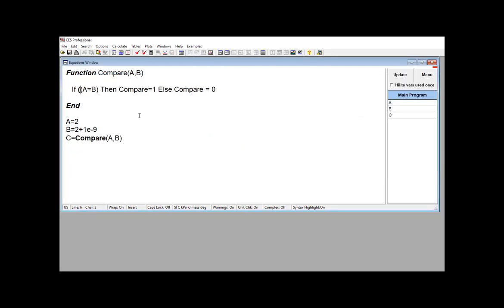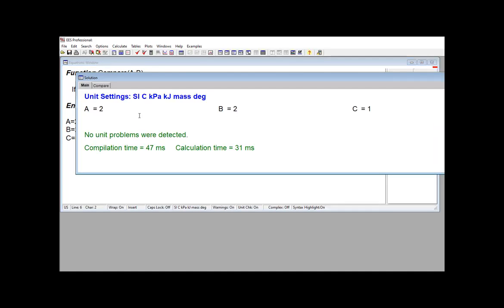So in order to combat this problem, it's a better approach to use a range. So here I'm using a range. As long as these two numbers are within 1 times 10 to the minus 5th of one another, then compare equals one, else compare equals zero.